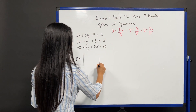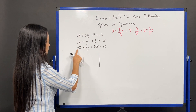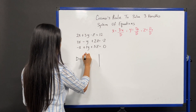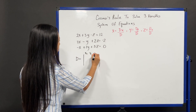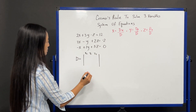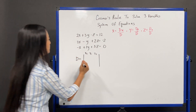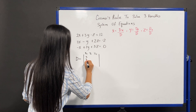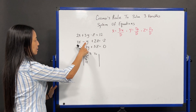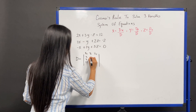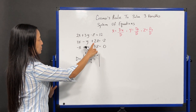This is going to be a 3 by 3 matrix. What goes into the first column is going to be the x coefficient. Our second column is going to be the y coefficient, and the last column is going to be the z coefficient. Our x coefficients are 2, 3, and negative 1. Our y coefficients are 3, negative 1, and 2, and our z coefficients are negative 1, 2, and 5.